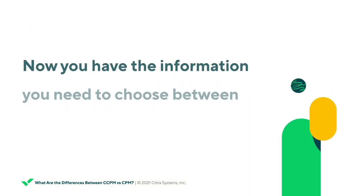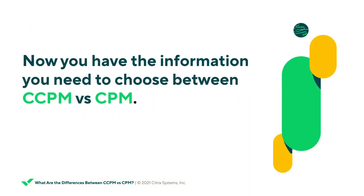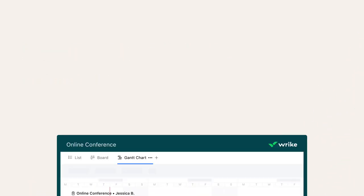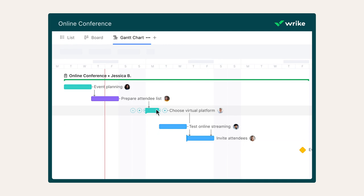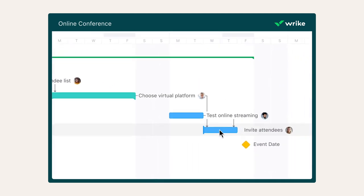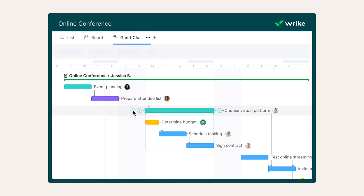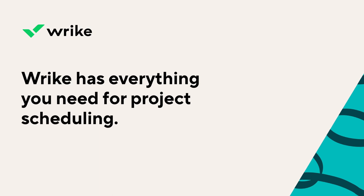Both CPM and CCPM are project scheduling methods that will help increase the likelihood that your projects are delivered on time. Now that you know the basics of each method, you can choose which one will work best for you. Because project scheduling with CPM and CCPM requires fitting in many project activities, using software to help visualize project schedules is important. Wrike project management software offers user-friendly Gantt charts that can help project managers schedule complex projects, assign resources, and adjust timelines with just a few clicks. Start a free two-week trial today!